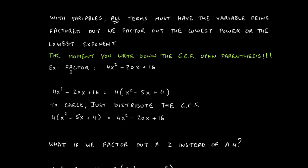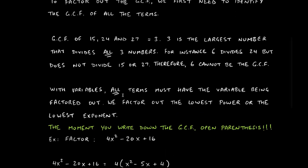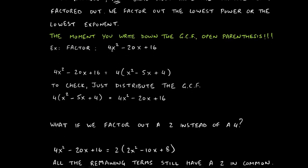Let's say we have: factor 4x² − 20x + 16. We have a factoring question, so the first thing we think about is the GCF. Always think about the numbers first, then the variables. Looking at 4, −20, and 16, we can quickly conclude that the GCF is 4, because 4 divides all three.